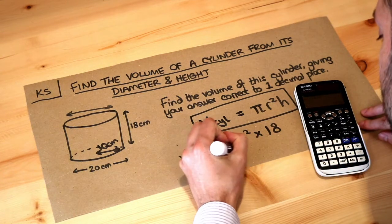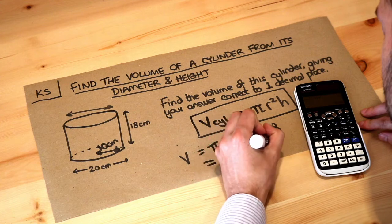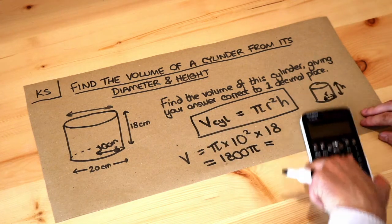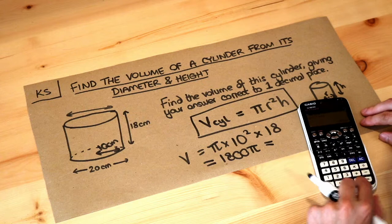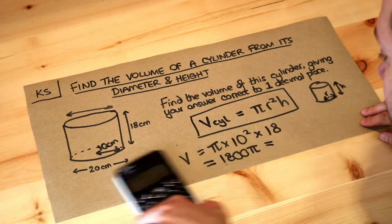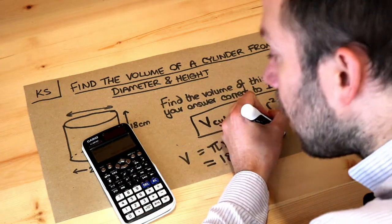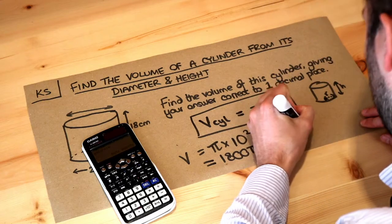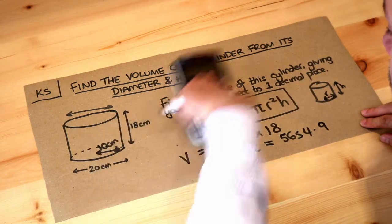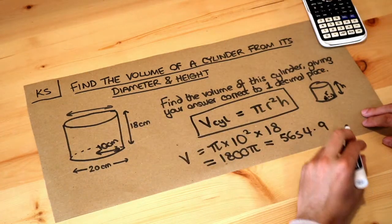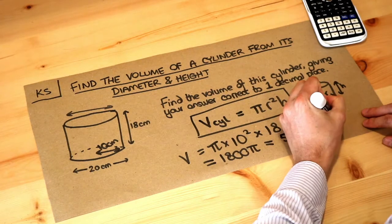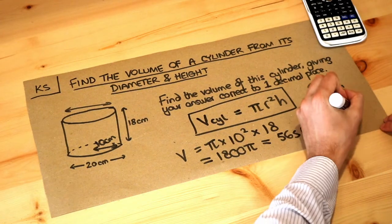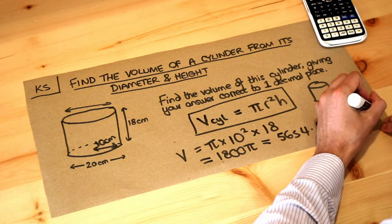My calculator says 1800π—it's giving an exact answer rather than using decimals. But if we press the S⇔D key, it gives the answer as a decimal: 5654.9. These lengths are all in centimeters, so the unit for volume will be centimeters cubed. That was to one decimal place, so that's the final answer: 5654.9 cm³.